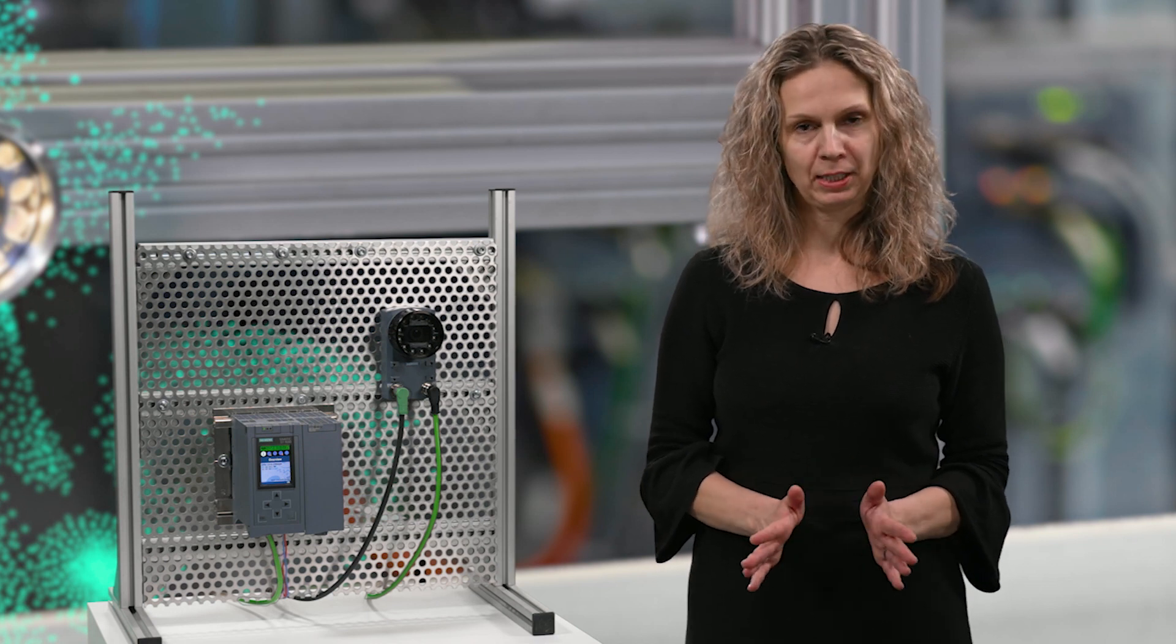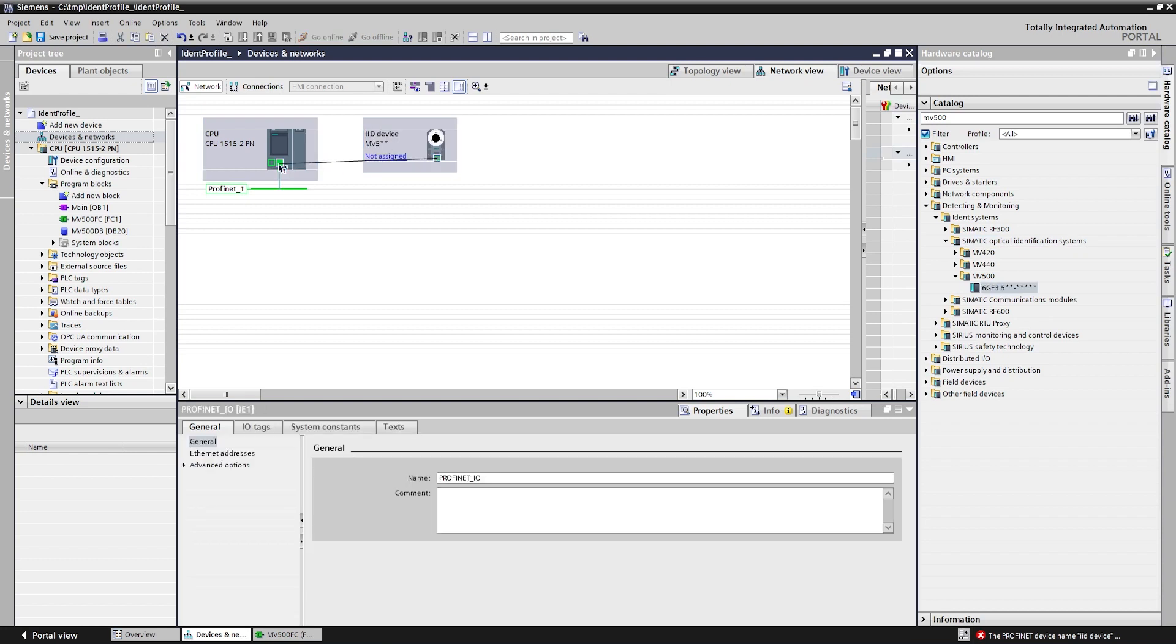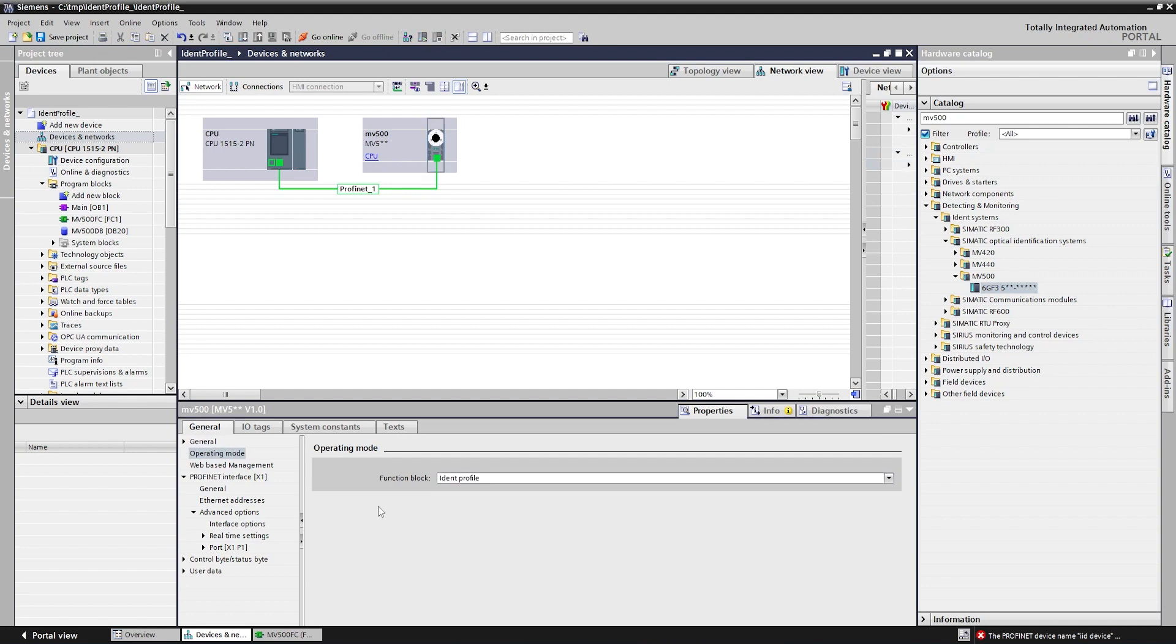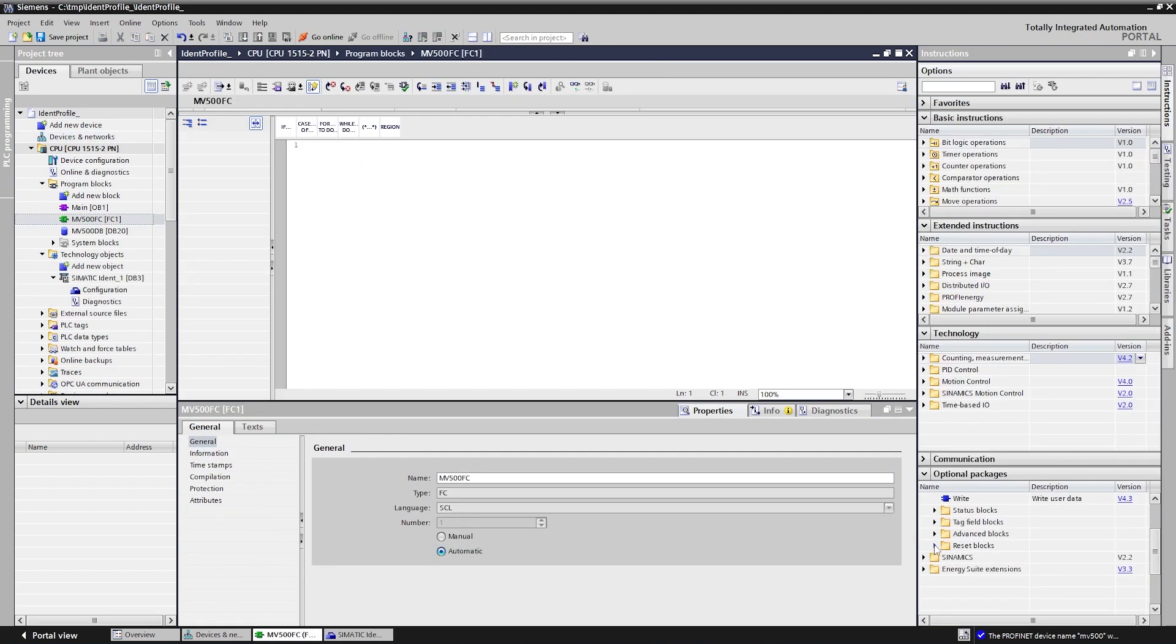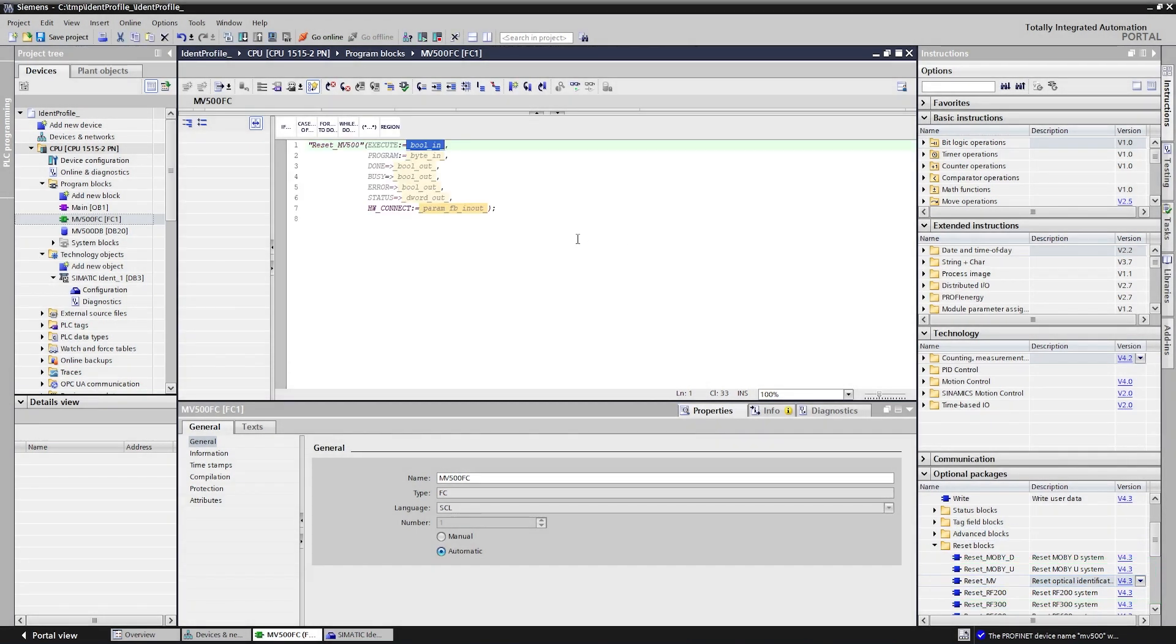And now I will show you how easily the camera is integrated into the PLC. To get the triggers and send the read results back, we will use two function blocks from the TIA portal. The first one is called INIT and it activates the connection between the PLC and the camera.